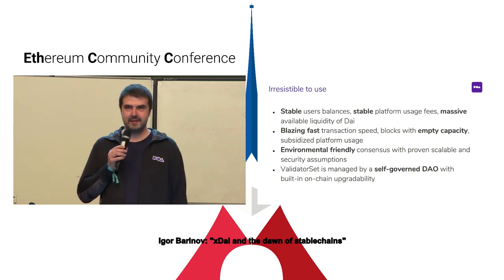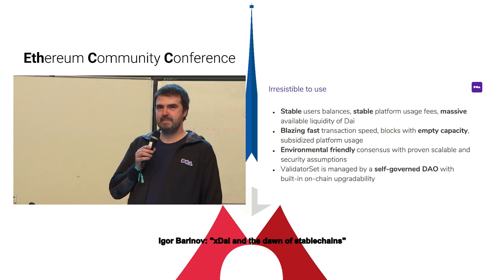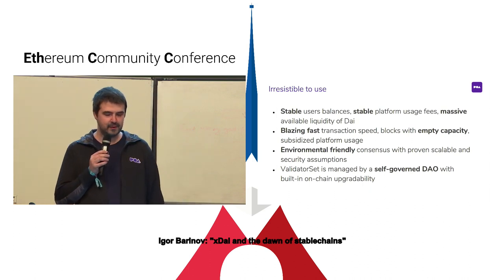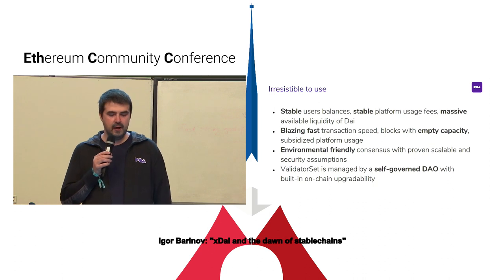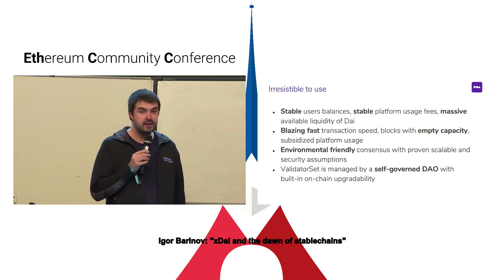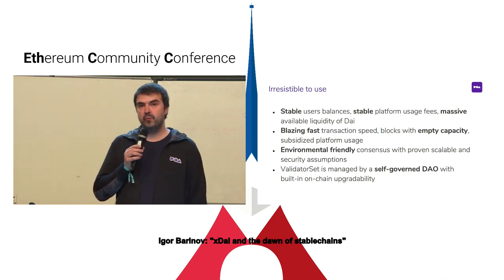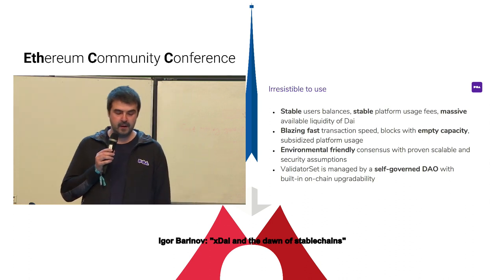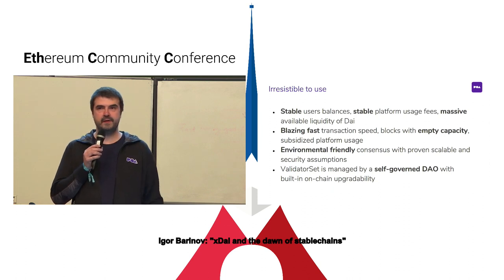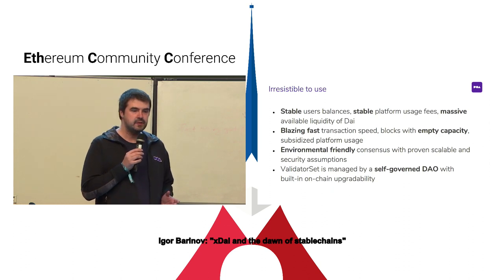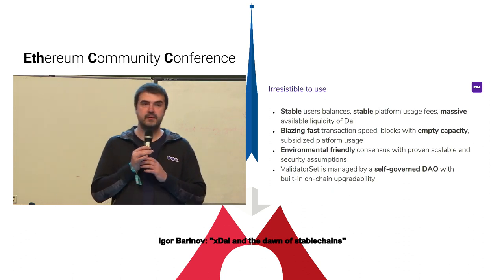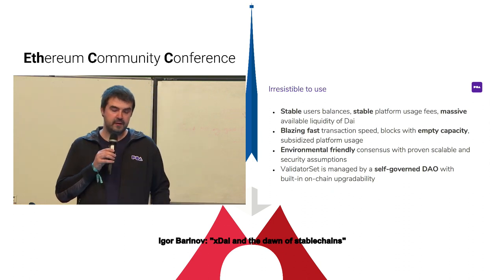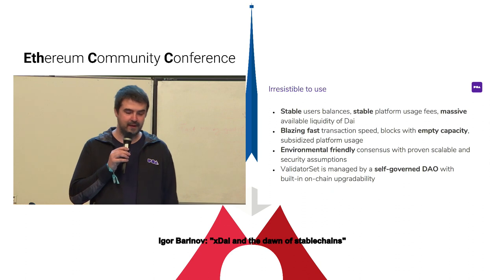The consensus of this chain is environmentally friendly - it's not proof of work. This consensus is proven with scalability and security assumptions working in production since 2017. The idea of having a bridged chain with different types of native tokens has been scalable and secure from 2017 until now.